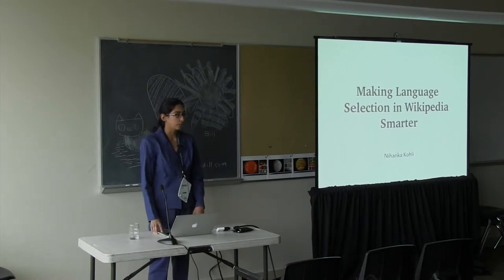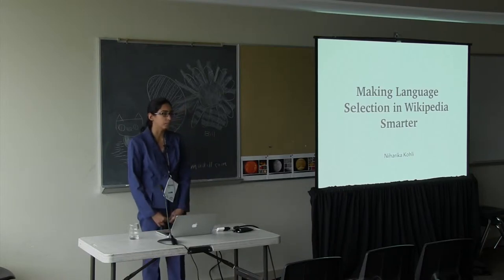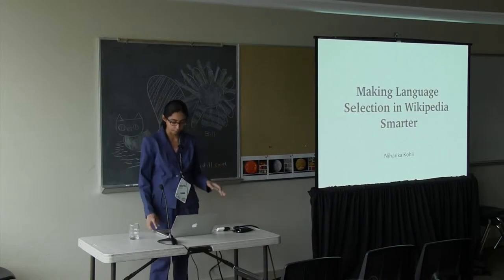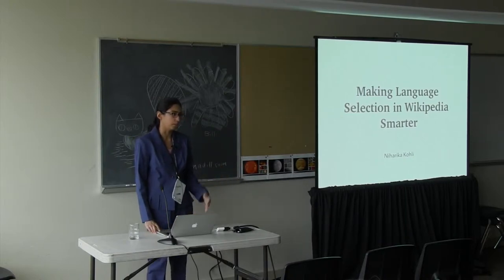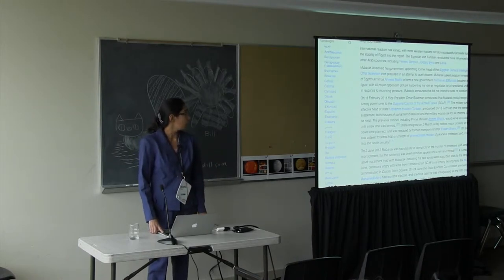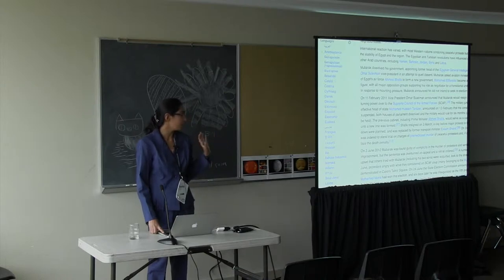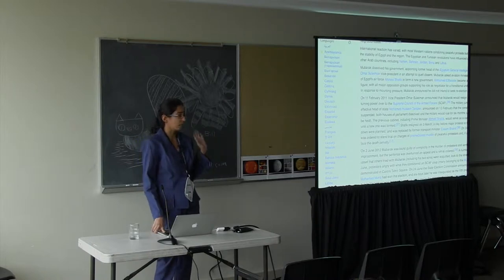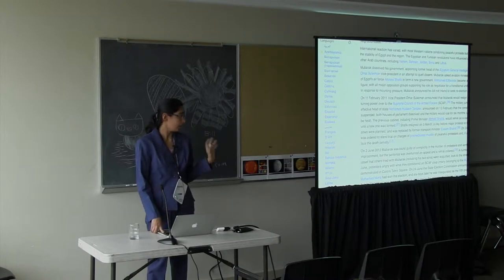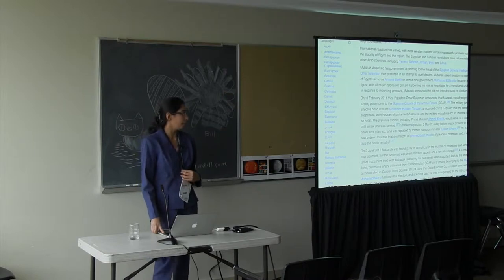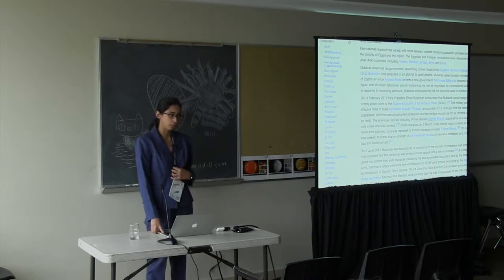Making Language Selection in Wikipedia Smarter - you might already be Wikipedia contributors or users, and you might have seen the long list of languages in the Wikipedia sidebar. The languages you see are sorted in alphabetical order of the ISO codes. This language list can get really terribly long because Wikimedia caters to a lot of languages. Our aim in this project was to make this list smarter and customized for the user.